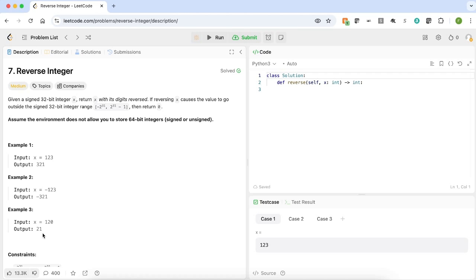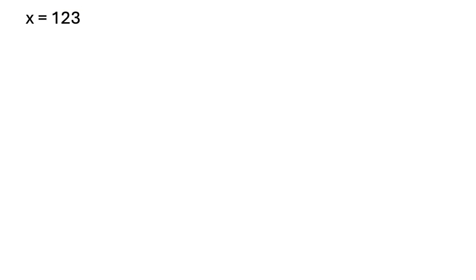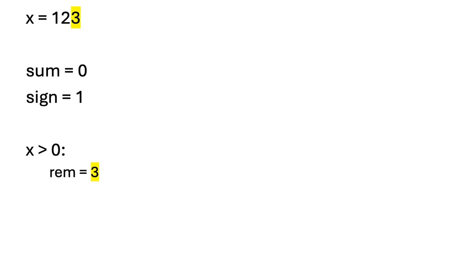Now let's see the approach to solve this problem. Let's consider our integer is 123. As a first step, we are declaring two integers: sum and sign. We assign the initial value 0 for sum, and sign equals 1 if the number is positive. Next, we will iterate through the loop until the number is greater than 0. Then we find the remainder, which is the ones digit of the number. In our case, the ones digit is 3.